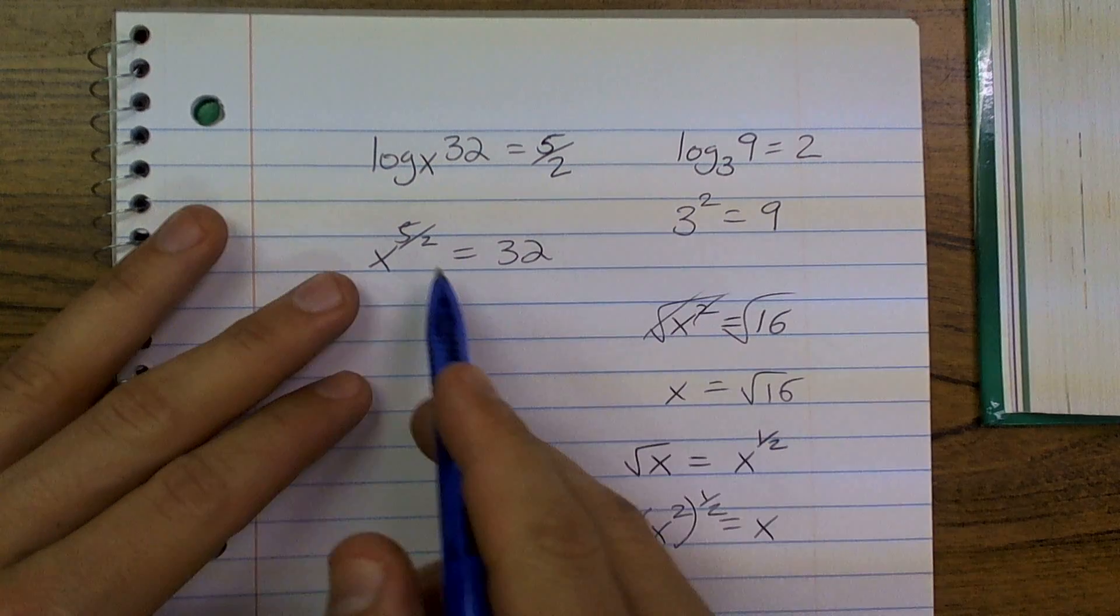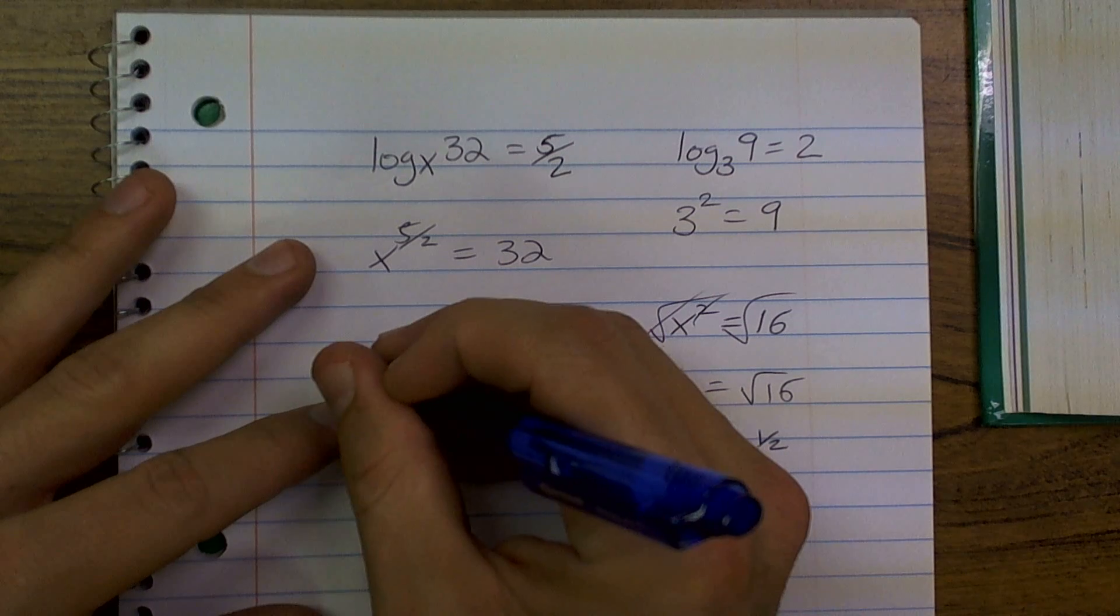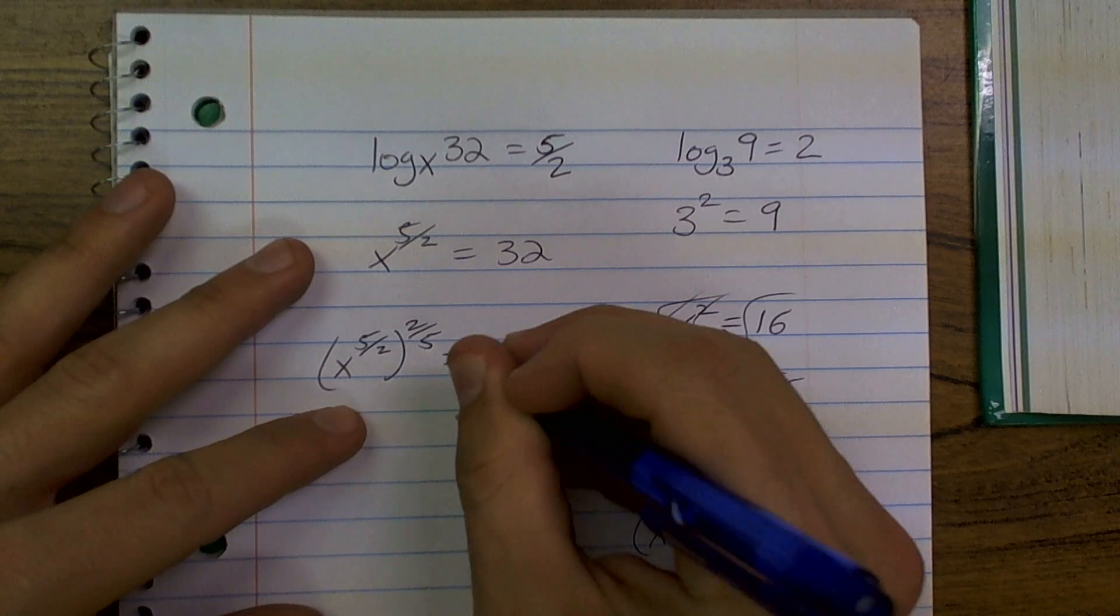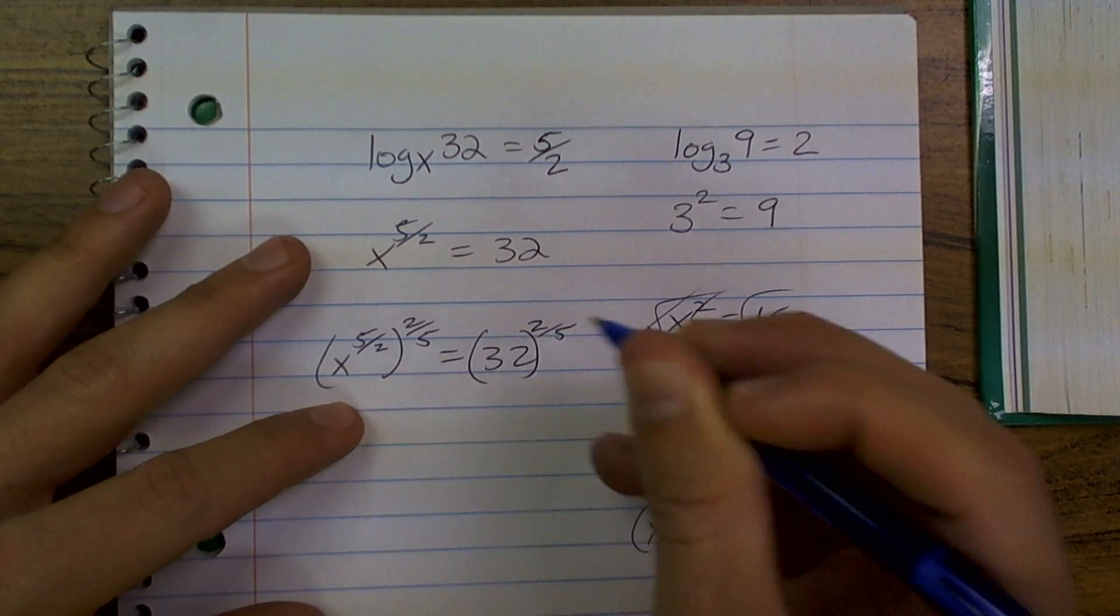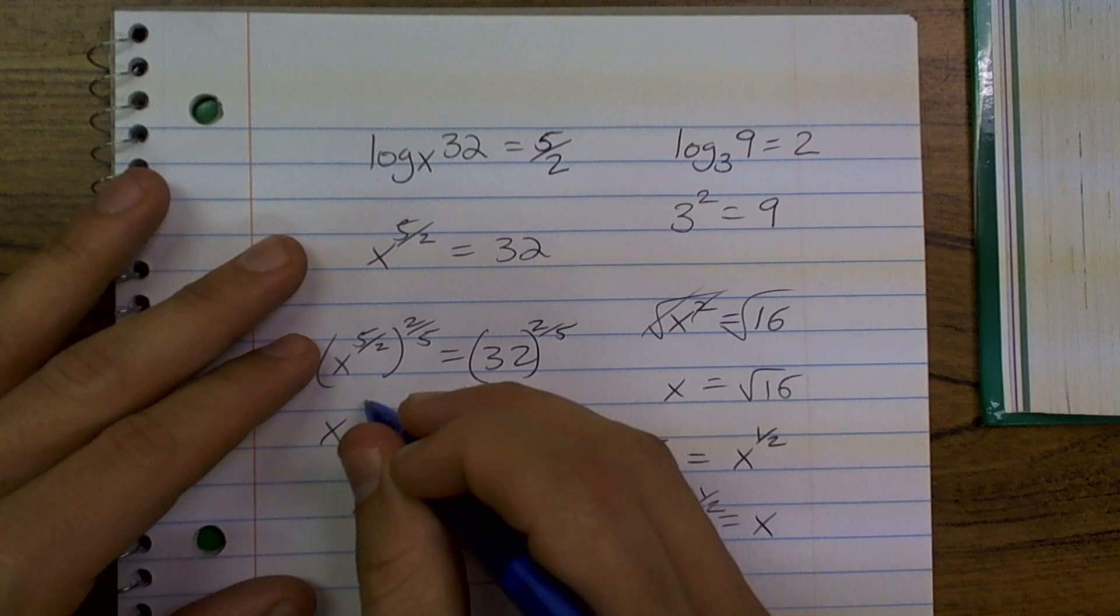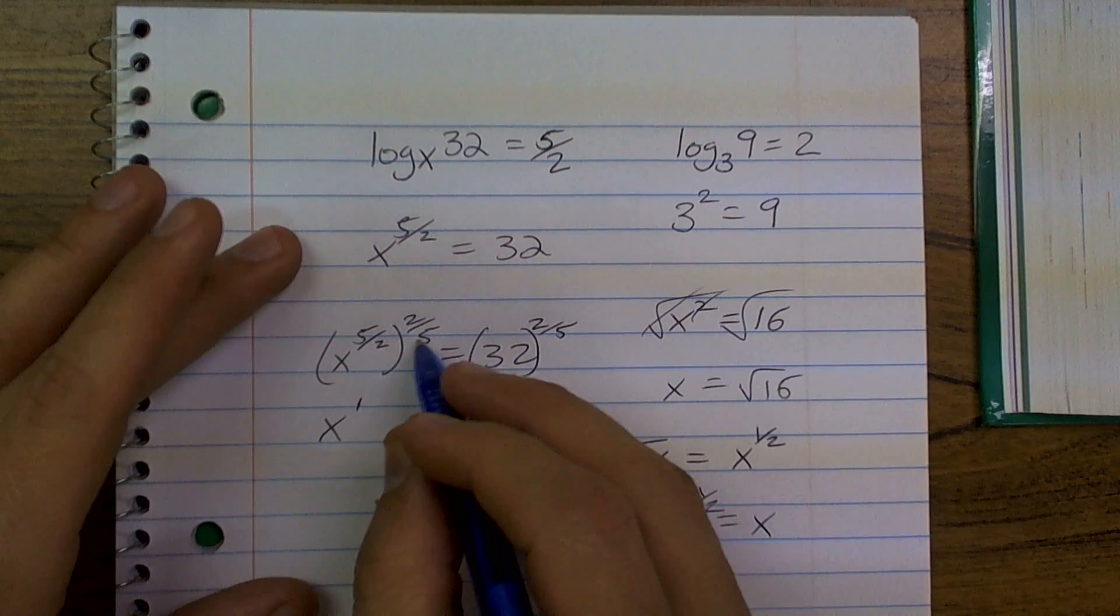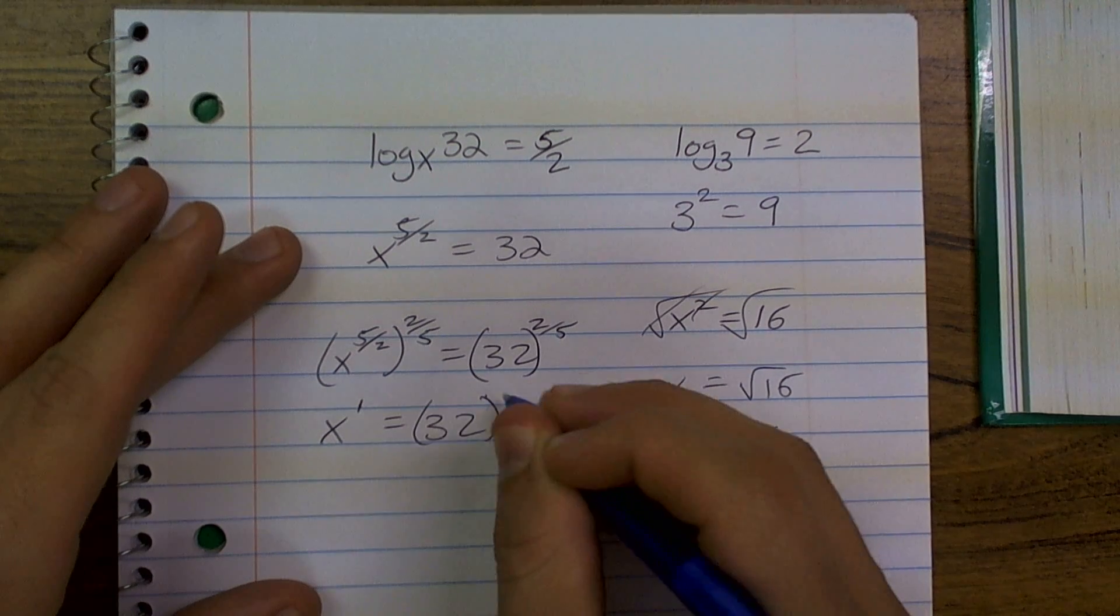What I'm going to want to do is, rather than rooting it and square, I can just write this as x to the 5 halves. And what I'm going to do is, I'm going to raise both sides to the 2 fifths. Well, what will happen here is, I'm going to get x to the 1st power, as those are going to cancel out, equals 32 to the 2 fifths.